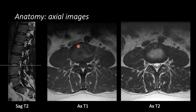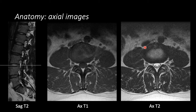Here we are at the intervertebral disc level. On the T1-weighted image, the disc is relatively uniformly intermediate in signal intensity. On the T2-weighted image, you can see that the annulus fibrosus is a little bit darker than the nucleus pulposus centrally, which is brighter.